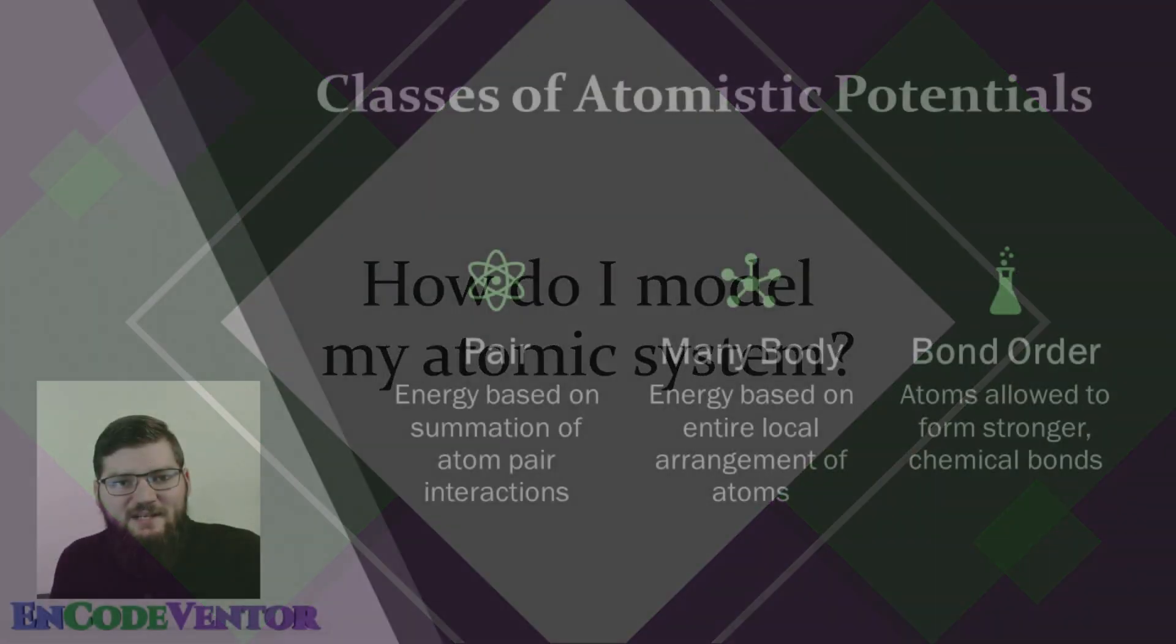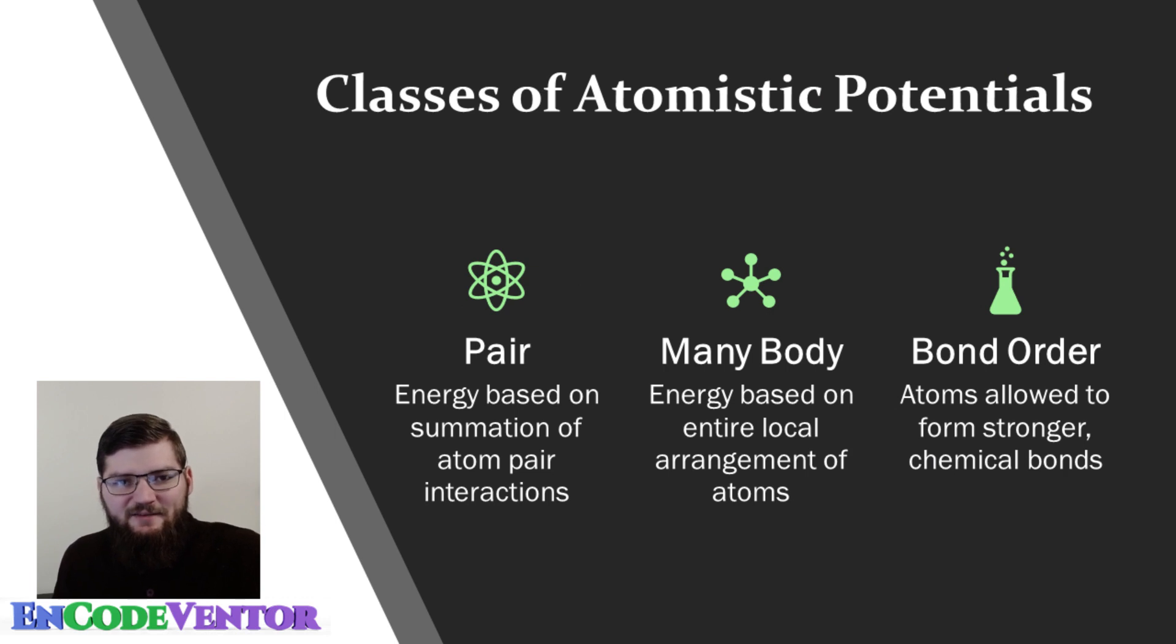We're going to look at atomistic potentials in the context of three different categories. There are a bunch of different ways you could categorize atomistic potentials. We're going to start with these because they pretty much encompass all atomic potentials. First, you have pair potentials, which are the first potentials and the simplest potentials, where the energy of any atom is simply the summation of the pair interactions between it and all the other atoms around it.